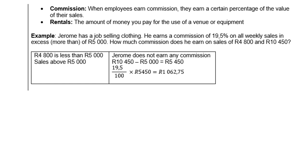Example: Jerome has a job selling clothing. He earns a commission of 19.5% on all weekly sales in excess — which means more than — 5,000 rand. How much commission does he earn on sales of 4,800 rand and 10,450 rand? Sales of 4,800 rand are less than 5,000 rand, so Jerome does not earn any commission. For sales over 5,000: 10,450 minus 5,000 gives 5,450, times 19.5 over 100, which gives an answer of 1,062.75 rand.